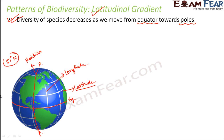When measuring latitude, the equator is zero degrees and the value gradually increases — 20, 40, 60 degrees and so on — expressed in degrees and minutes. Now returning to latitudinal gradient: this concept states that the diversity of species is greater near the equator, and as we move towards the poles — either north or south — the diversity of species decreases. This is known as the latitudinal gradient.